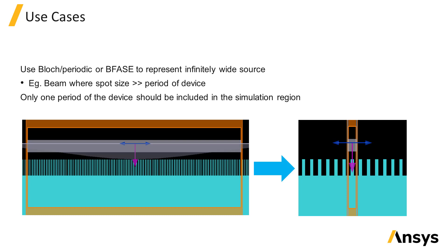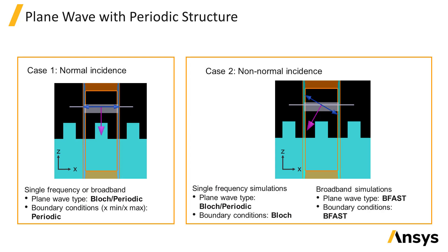We can then simulate just one period of the structure with periodic or Bloch boundaries at the sides and use the plane wave source. Use cases are shown here where a single unit cell of the periodic structure is included in the simulation region, and PML absorbing boundaries are used above and below the structure to absorb any reflected or transmitted light.